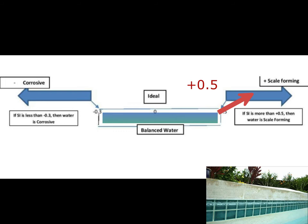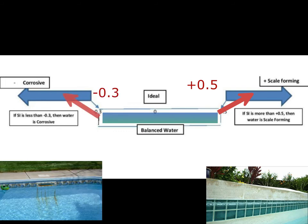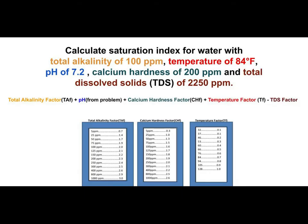If you're past negative 0.3, you have corrosive, hungry water. It's going to eat away at everything — the pool surface, pool equipment, and your salt chlorine generators as well. So we don't want to have this unbalanced water that will cause issues.